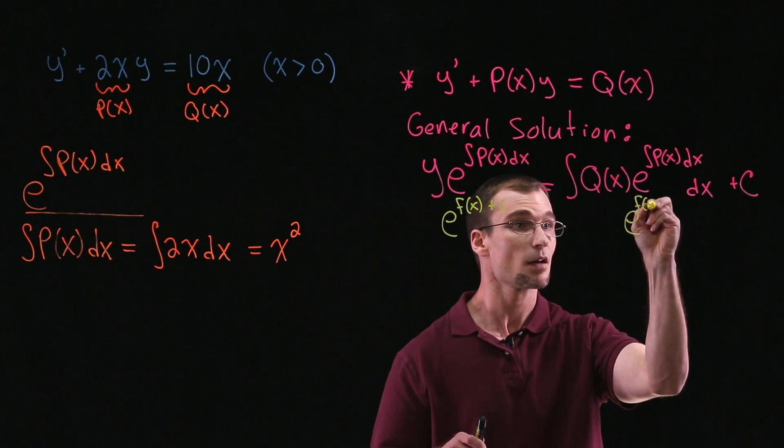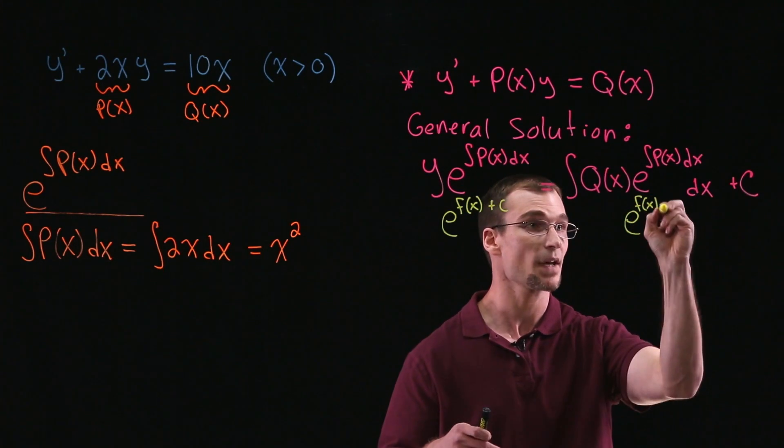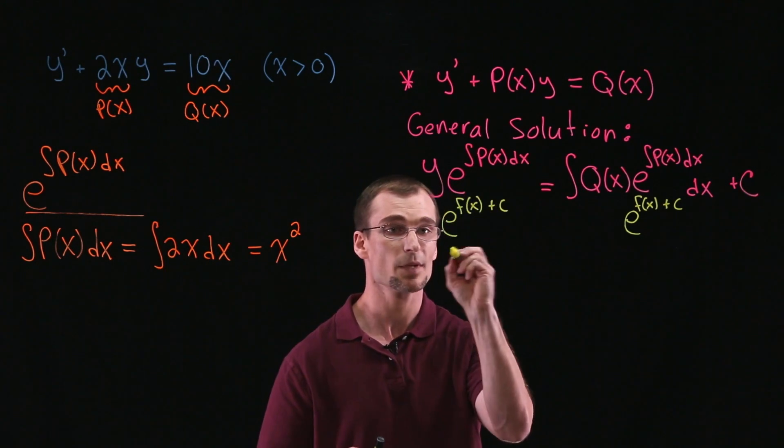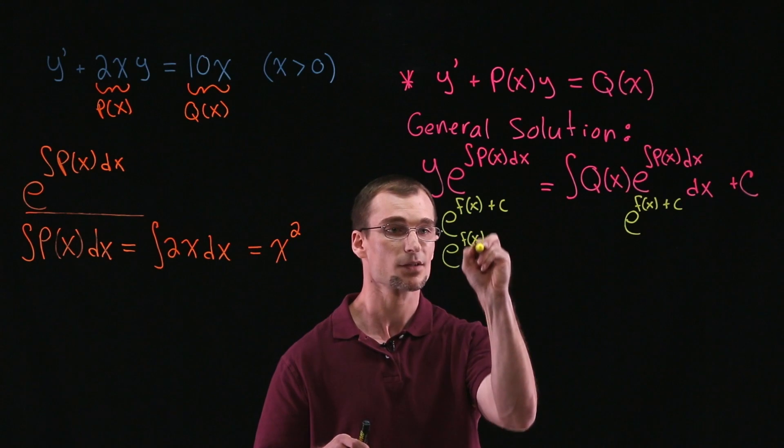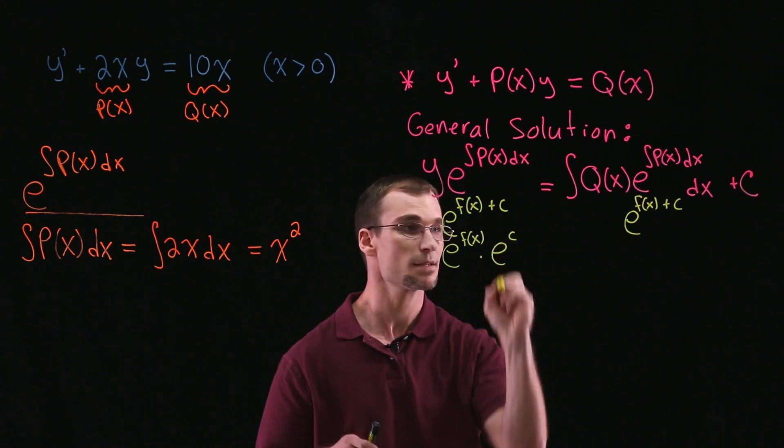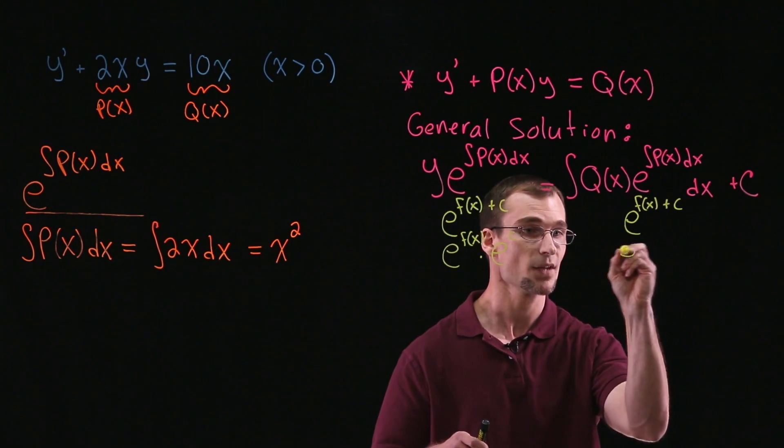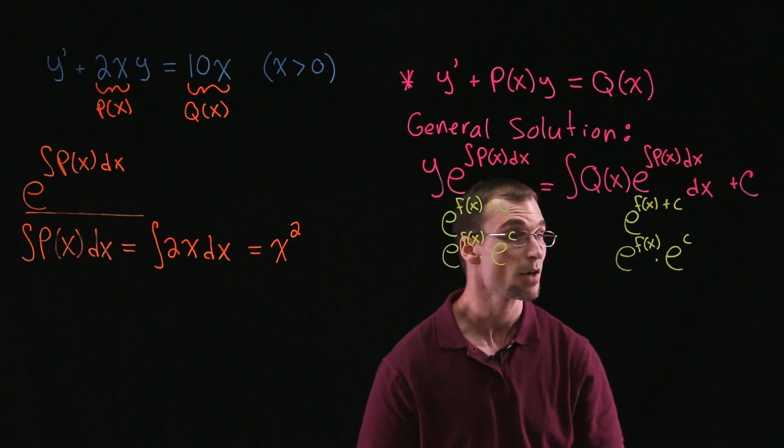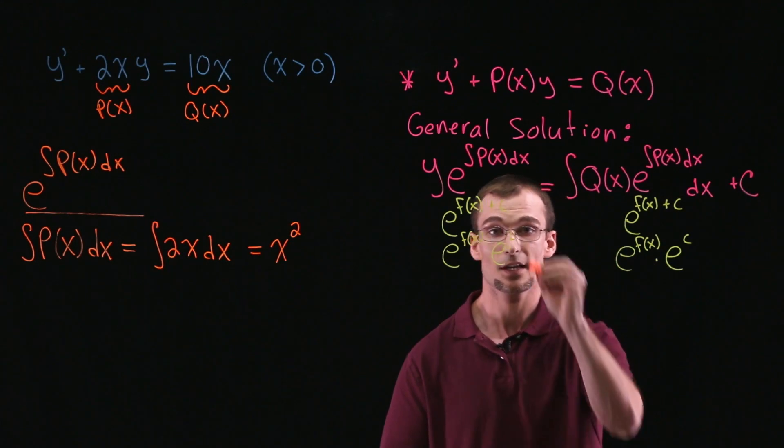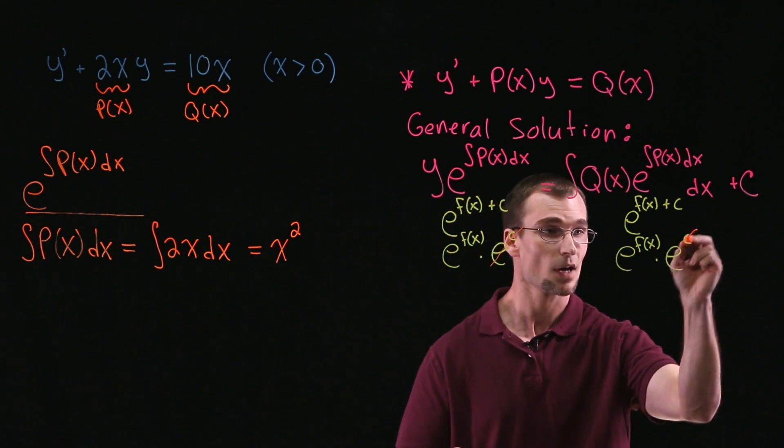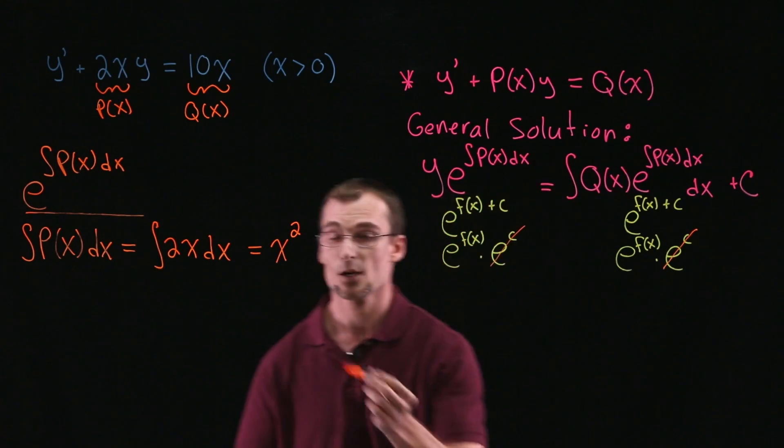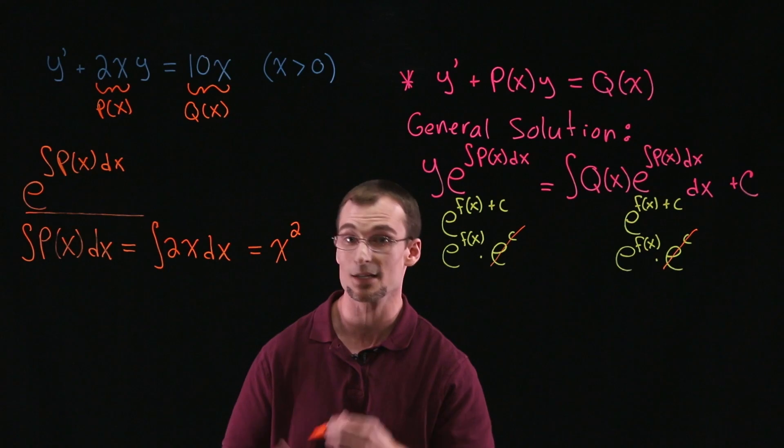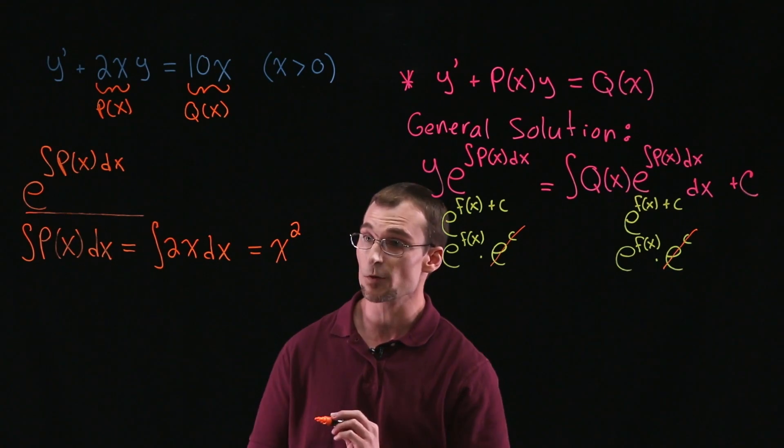We'd have e to f(x) plus some general constant c. Well, from algebra, this can be rewritten as e to the f(x) times e to the c. And this would be the same, e to the f(x) times e to the c. So what is e to the c? That's just a constant. It can get canceled out on both sides of the equation. So that's why we're not going to add the plus c or any other constant over here. We'll just leave it as is because in the end it would just cancel out anyway. So we'll proceed from here.